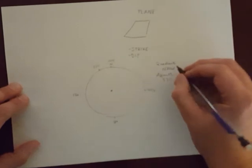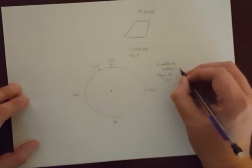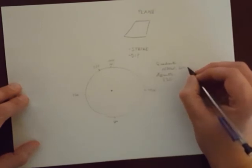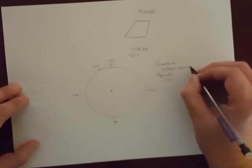How we record dip is just writing down the angle of dip between 0 and 90, and be sure that I record the dip direction. I'm going to write down to the northeast here.